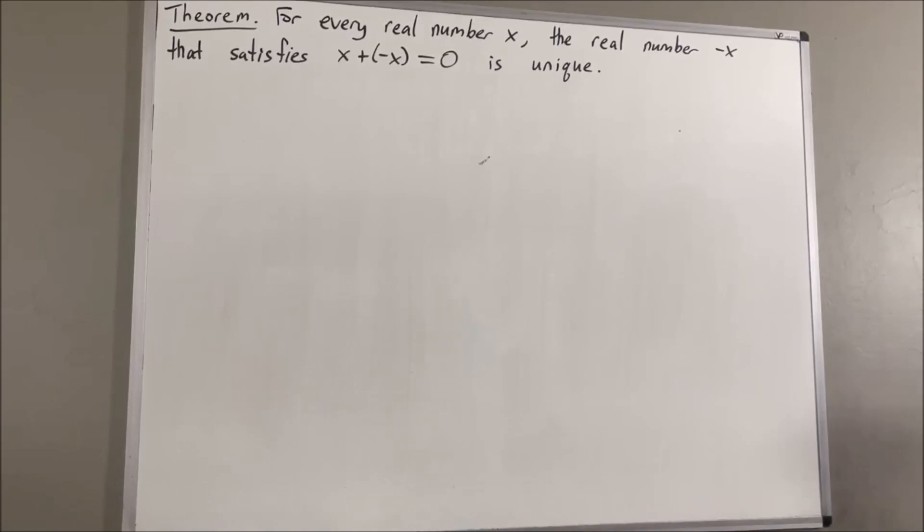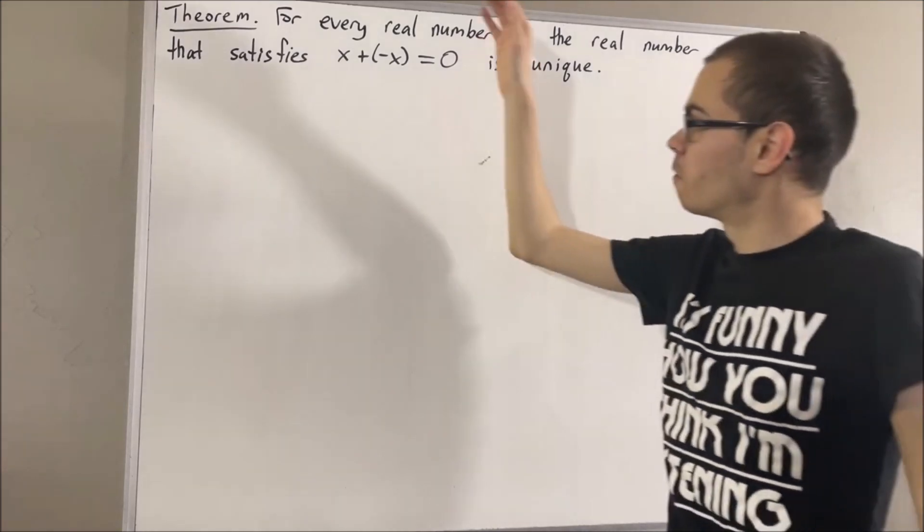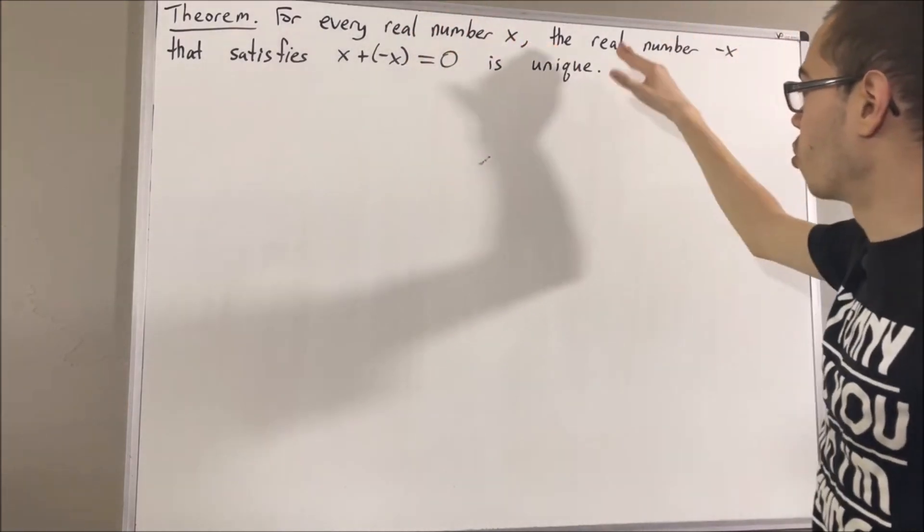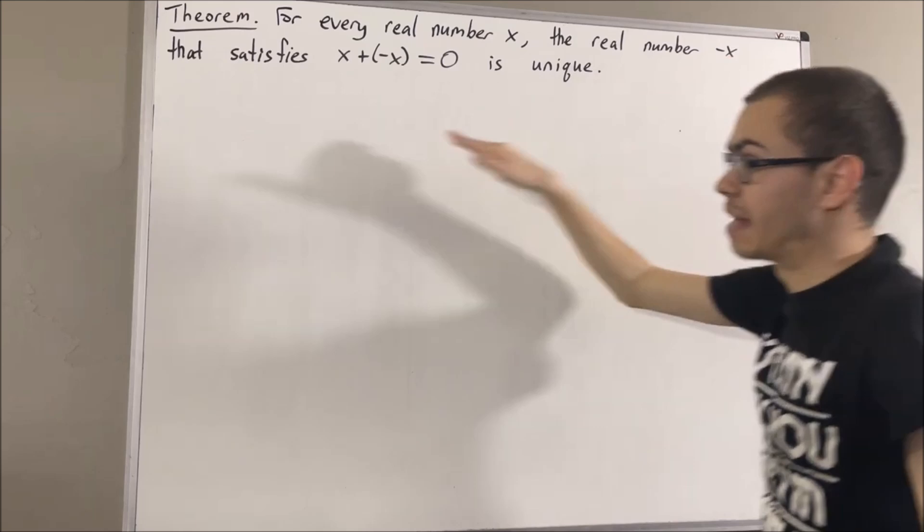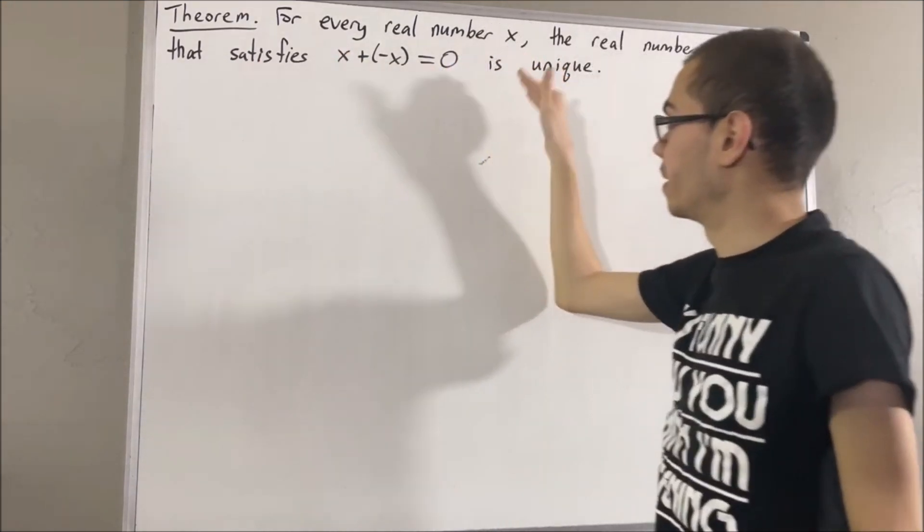Hello. In this video, we're going to prove the following theorem. For every real number x, the real number negative of x that satisfies the property x plus negative x equals zero is unique.